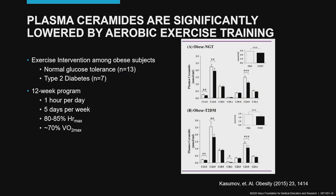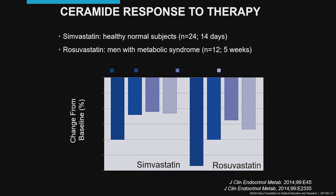One important aspect and characteristic of ceramides and the ceramide score is the fact that they're modifiable biomarkers. This has direct clinical implications for us providers. Ceramides are lowered with the Mediterranean diet, with aerobic exercise training, or with pharmacologic interventions such as statins or more recently with PCSK9 inhibitors — all measures that we extensively use in preventive cardiology.